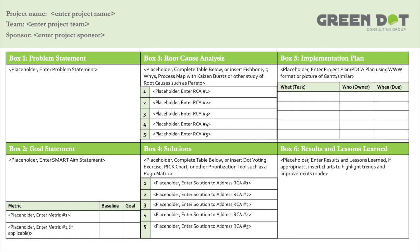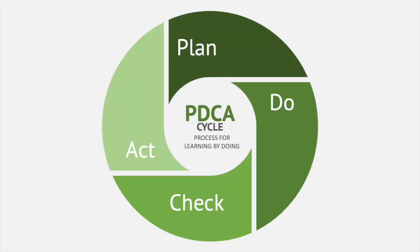From there you move to the rightmost column — the future state. Box five is all about action planning. Organizations often use PDCA: Plan, Do, Check, Act. You're doing a small test of change to demonstrate that the improvement idea can be followed by operators, that the organization is willing to accept the change from a change management perspective, and that as you apply the idea over time you can measure results and answer the question: how do you know there's been improvement?